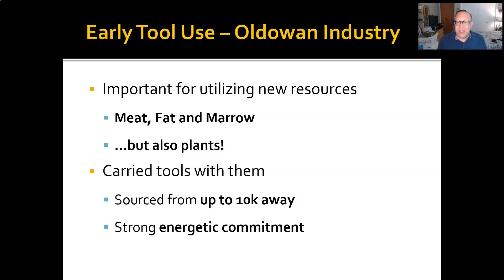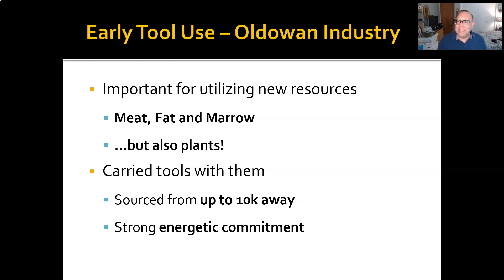Stone tools also take a strong energetic commitment. Once you get good at it, you can make a decent Acheulean hand axe in about 20 to 30 minutes, but you're working with one to two pounds of weight that whole time. That is a strong energetic commitment, so it better pay off — and it's pretty clear that it did.